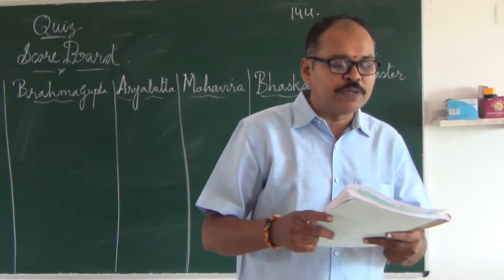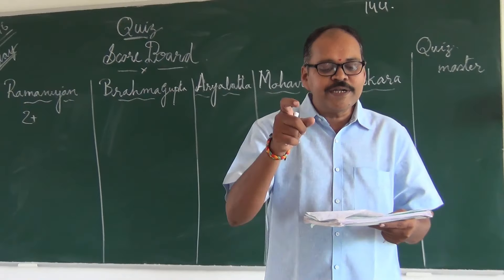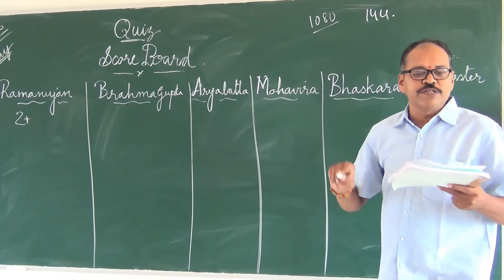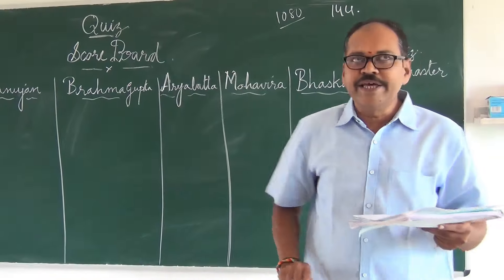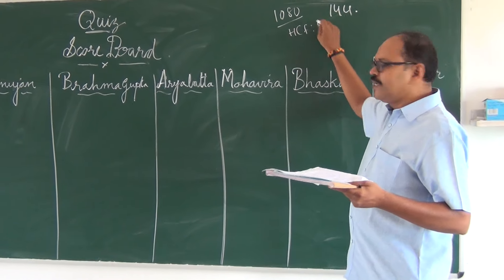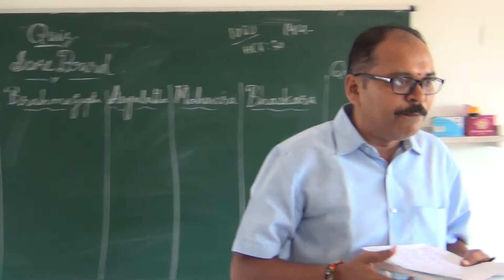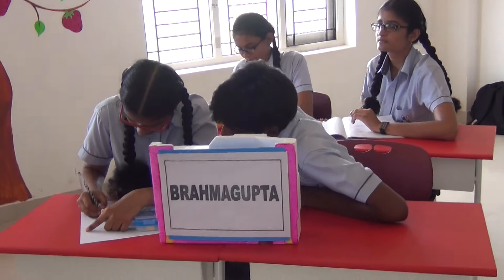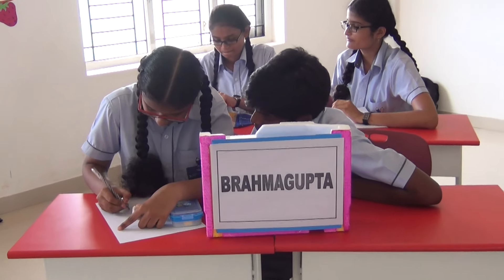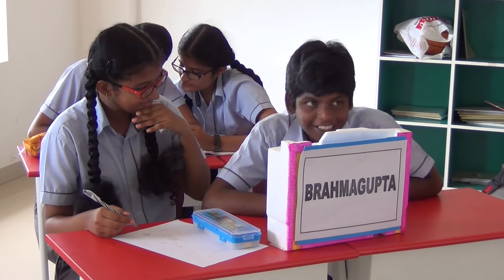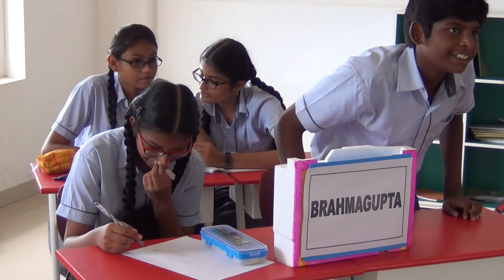Next question goes to Brahma Bhukta. If the product of 2 numbers is 1080 and their HCF is 30, what is their LCM? The answer is 36. Very good, correct.